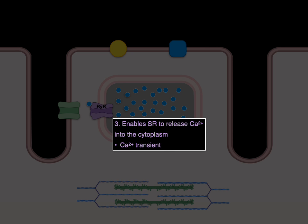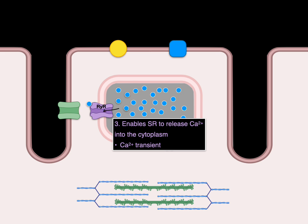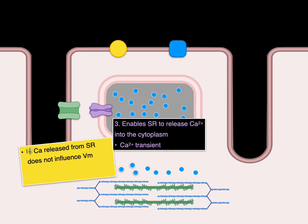The ryanodine receptor, now that it's open, enables the SR to release calcium into the cytoplasm. This is the calcium transient — all that calcium goes into the cytoplasm ready to help contraction. Note: calcium released from the sarcoplasmic reticulum does not influence the membrane potential. Only the ions that cross the membrane — that calcium current — influence the VM.